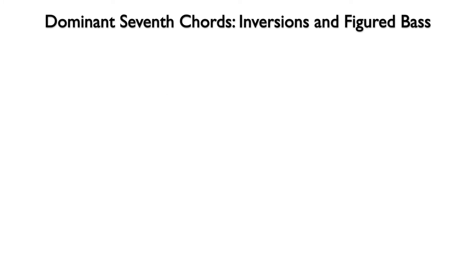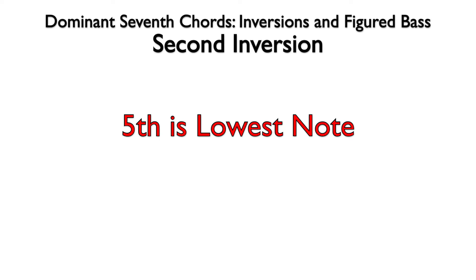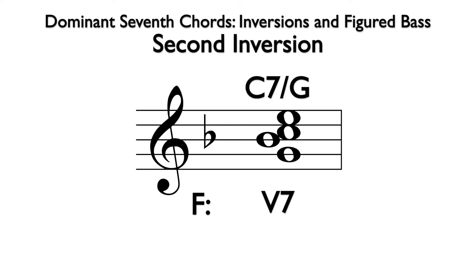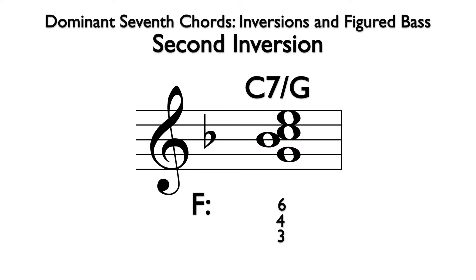Next, we will voice this chord in second inversion. As we learned with triads, the second inversion chord simply has the fifth as its lowest note. Here we are still using the C7 chord, V7 in the key of F, but now G is the lowest note. The chord symbol is C7/G, with C7 indicating the chord and G indicating the lowest note. From G to E is a sixth, G to C is a fourth, and G to Bb is a third. So the longhand figure is 6-4-3, typically abbreviated to 4-3.